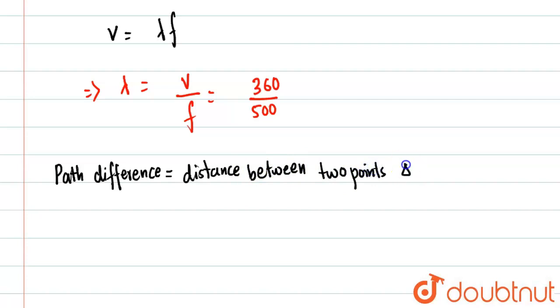Which is delta phi out of phase. This is given by a direct formula: lambda upon 2π into delta phi. Delta phi is the phase difference.